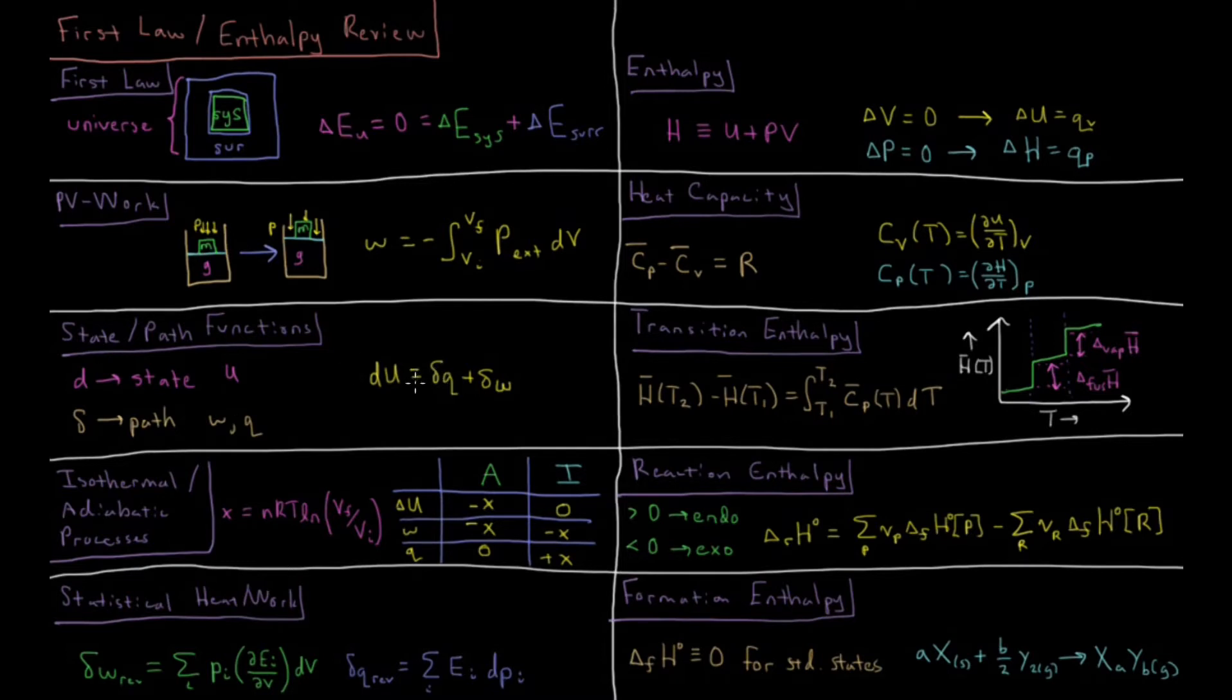In terms of the first law of thermodynamics we can write it in a differential form as dU equals dq plus dw, noting the inexact differentials for the path functions. Then in the integrated form, we have delta U, our total change in energy from state one to state two, is equal to heat plus work.